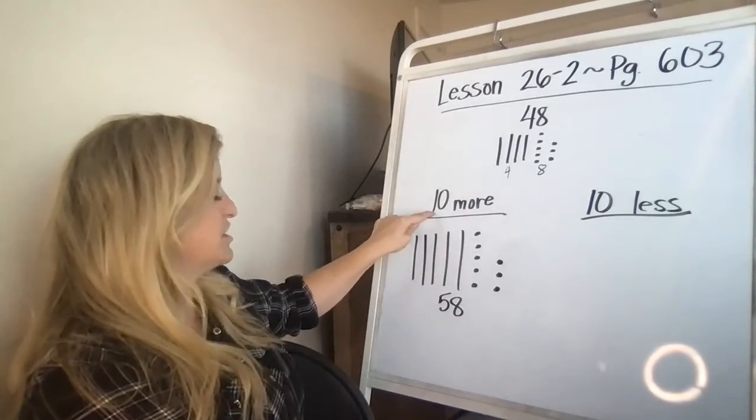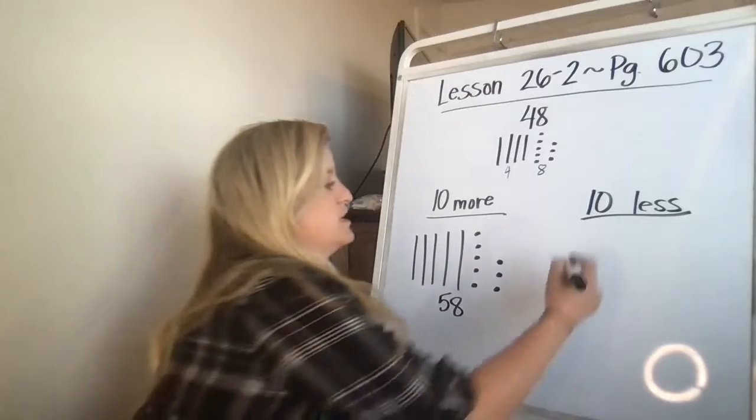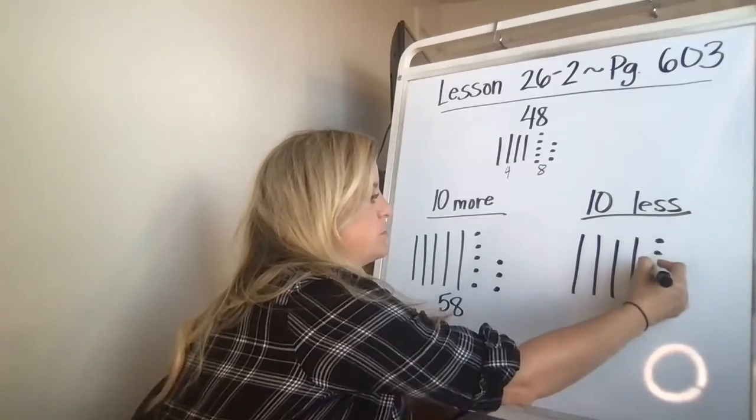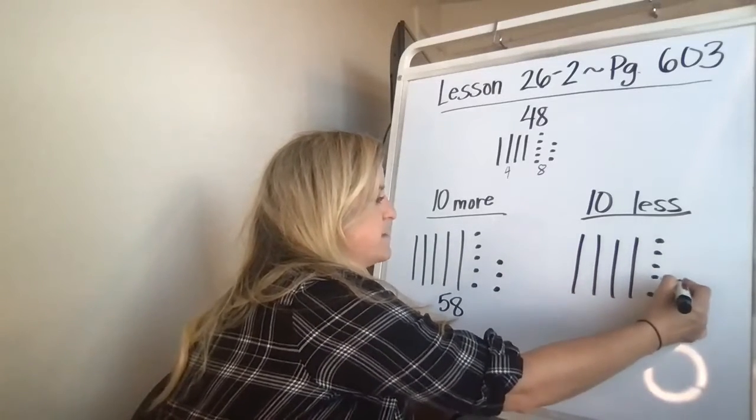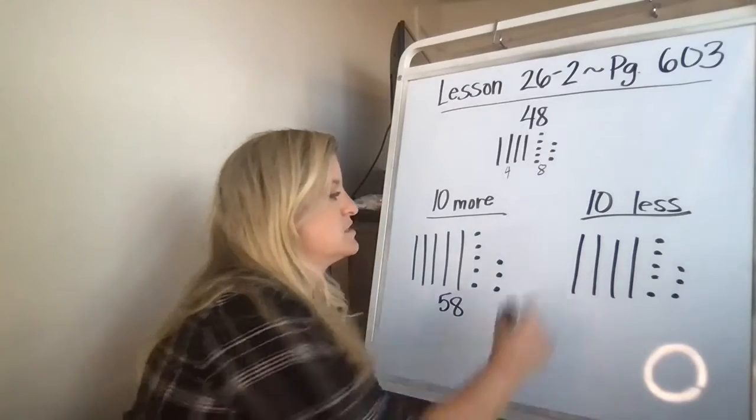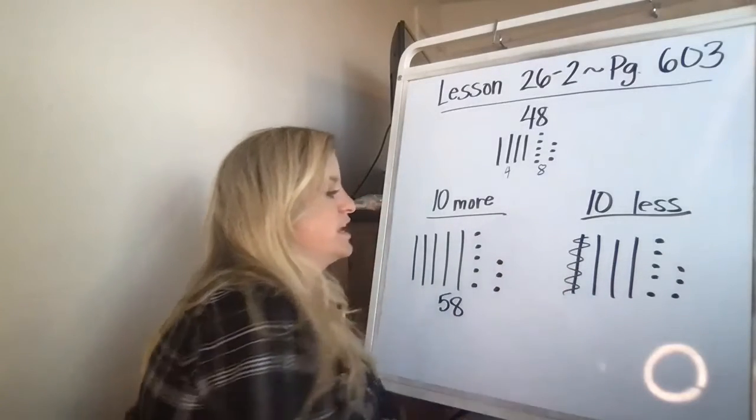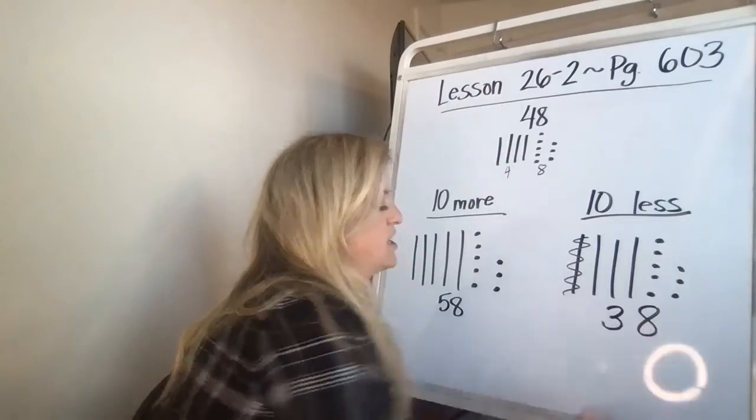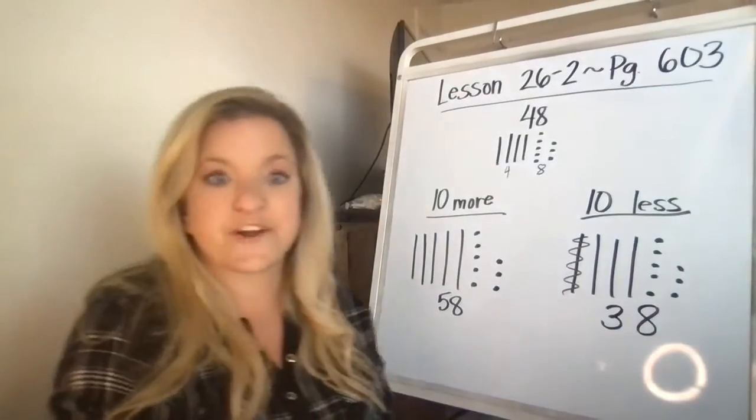All I did was add another stick of 10. Now I'm going to do 10 less. I'm going to do 10, 20, 30, 40, and then one, two, three, four, five, six, seven, eight. 10 less, I'm going to cross out that. Now I have three and eight, which makes 38.